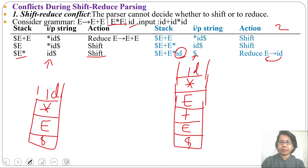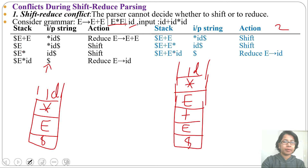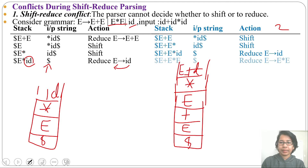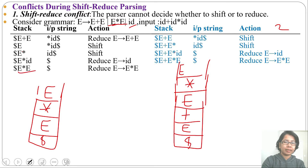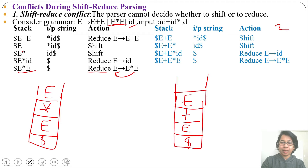We can reduce id to E. In the case of the first parser, the stack contains E multiplication id and the input pointer is pointing to $. So this id is a handle; we can reduce id to E. In the case of parser 2, this id will be reduced to E, so the stack contains E plus E multiplication E. In the case of the first parser, the stack contains E multiplication E — this is a handle, it is present at the RHS, so it can reduce to E. In parser 2, the stack contains E plus E; as E multiplication E reduced to E, and now E plus E is also a handle, so it can reduce to E.